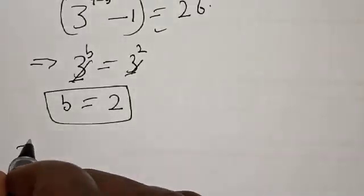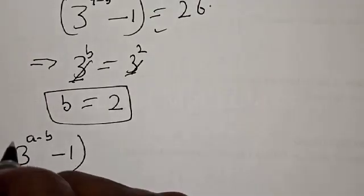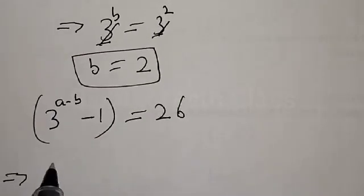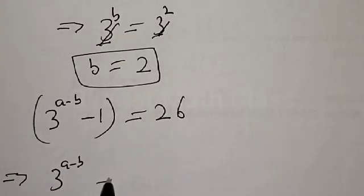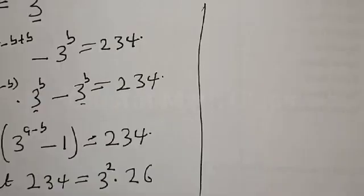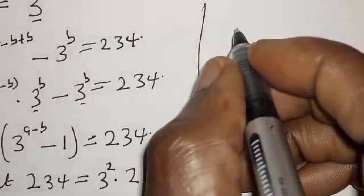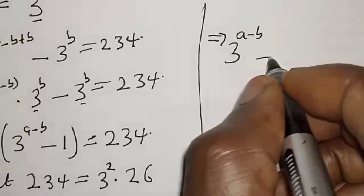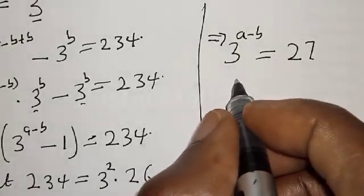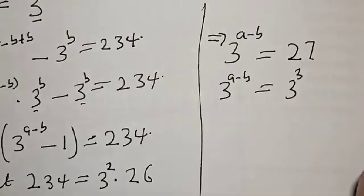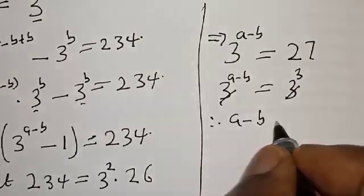Now from 3 to power a minus b minus 1 equal to 26, this implies that 3 to power a minus b will be equal to 26 plus 1. Since the minus 1 crosses to the other side it becomes plus 1. This gives us 3 to power a minus b equal to 27. Since they have the same base, the bases cancel, and therefore a minus b is equal to 3.